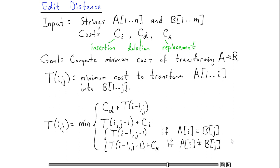And we can convince ourselves that any method that transforms the first i characters of A into the first j characters of B must arrive at that solution via one of these four routes.